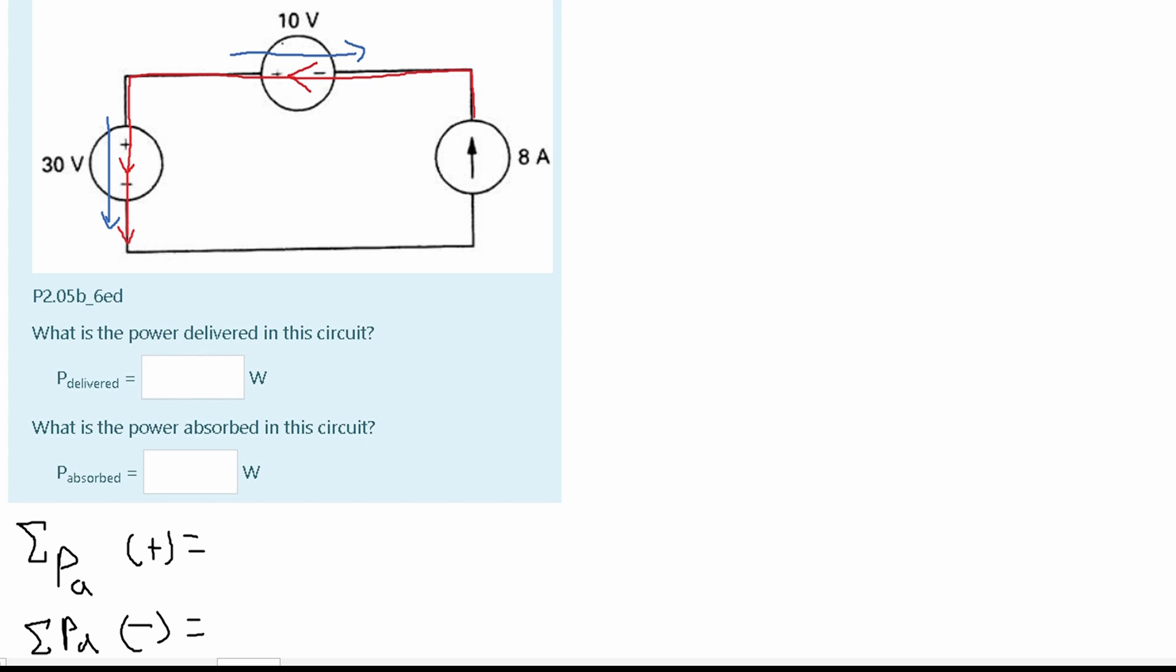So for the 10 volts, we can see that our current is going in the opposite direction of our voltage. That means this is power being delivered. So we're going to have a negative here and then 10 volts times the current. And since it's in series, this is going to be the current that is used for each of these.